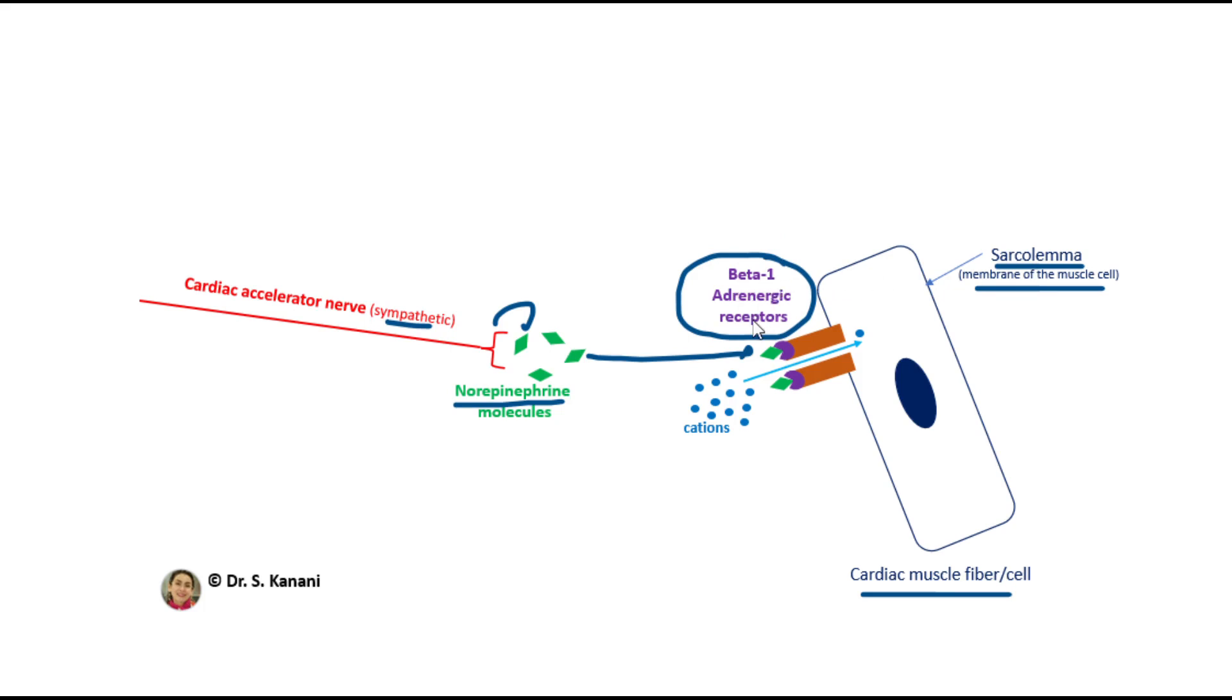And as soon as norepinephrine binds to these beta-1 adrenergic receptors, the ion channels for positively charged ions, cations, open. And due to the inflow of these cations, the cell is excited, is stimulated.